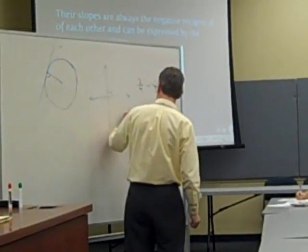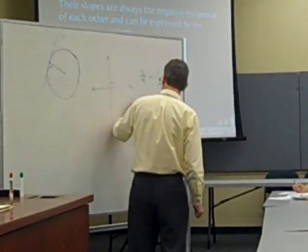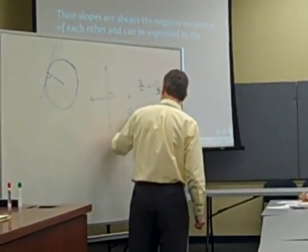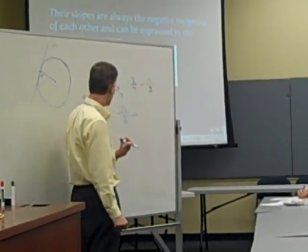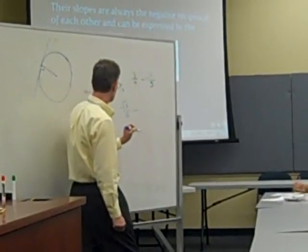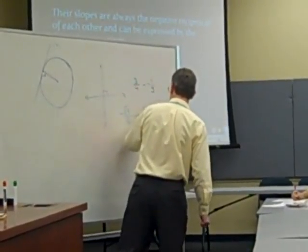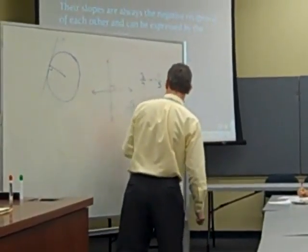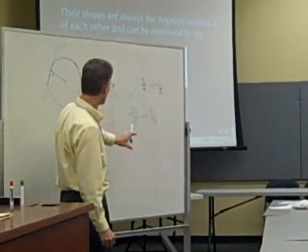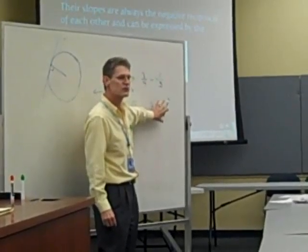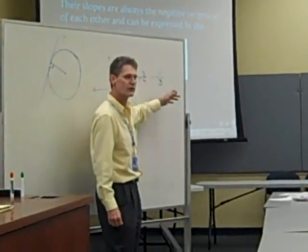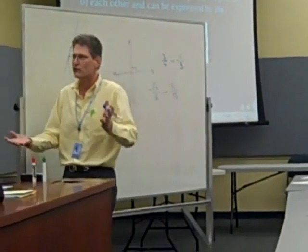But we call that the negative reciprocal. So if we've got, let's say, the square root of three over two, what is the negative reciprocal of that? Two over the square root of three. Okay, good. And I know we don't like square roots in the denominator, but I'm just giving you the general theorem for how to solve these things. Okay? So how does this really help us?